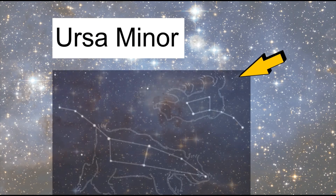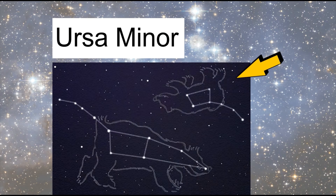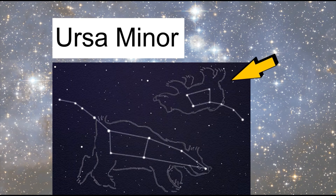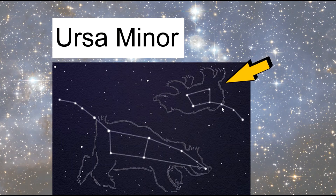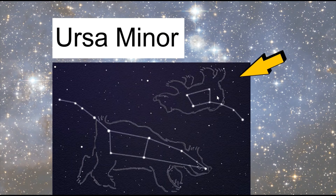Another example is Ursa Minor, or the Little Bear. You can see the Big Dipper here and also a small one. When I was a kid, me and my sister used to watch Ursa Major and Ursa Minor — the little and the big bear.